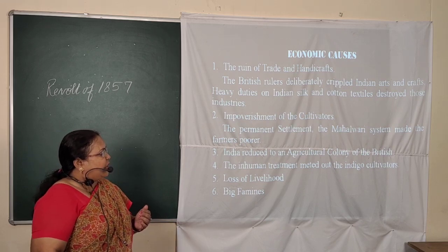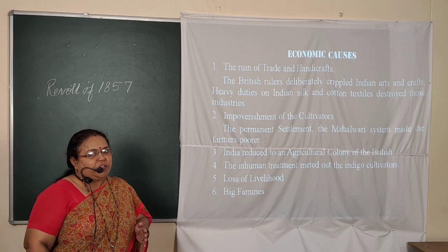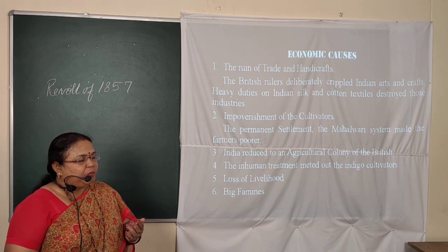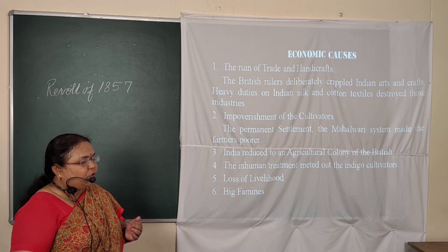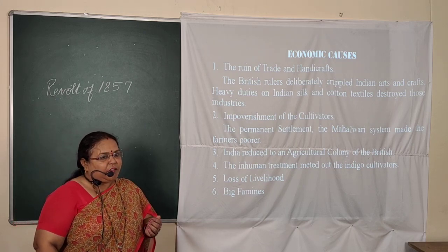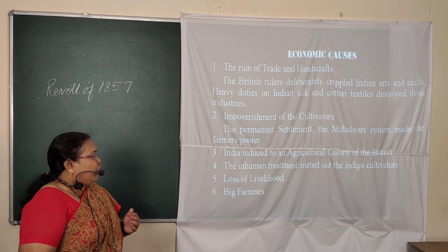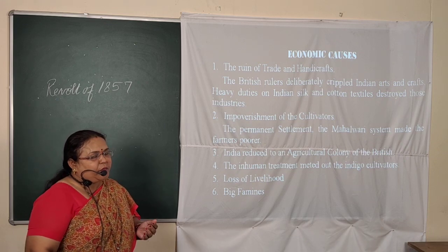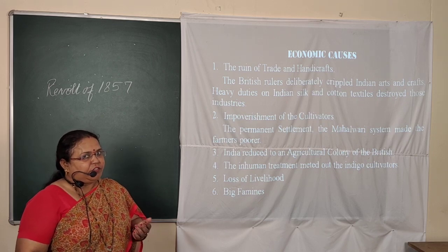India was reduced to an agricultural colony of the British. Whatever produce was there, it was being exported to Britain. The inhuman treatment meted out to indigo cultivators was severe — if farmers refused to cultivate indigo, they were brutally beaten. There was also loss of livelihood among all Indians, and two big famines took place for which the British did not take any steps.